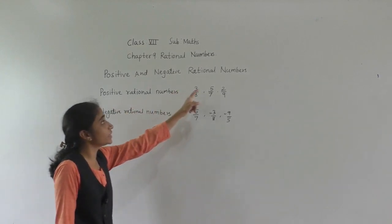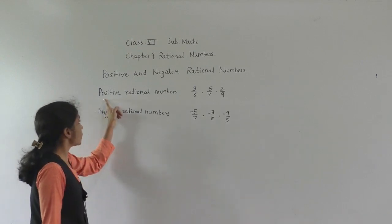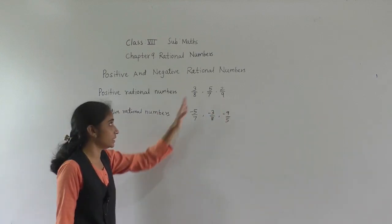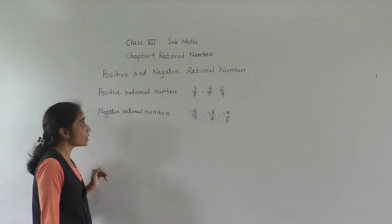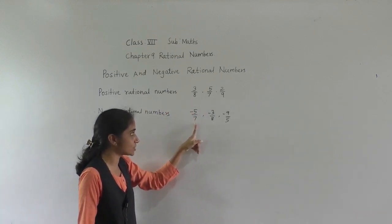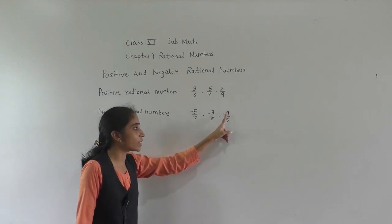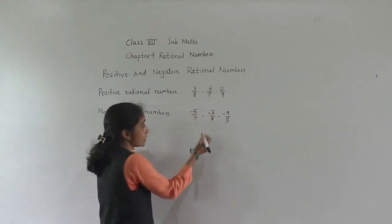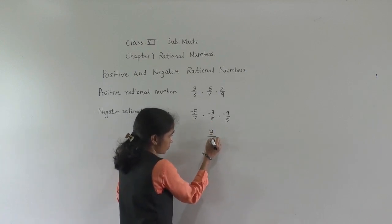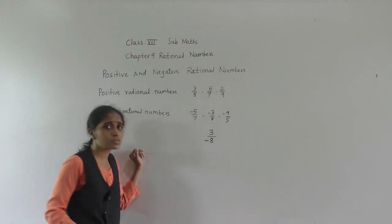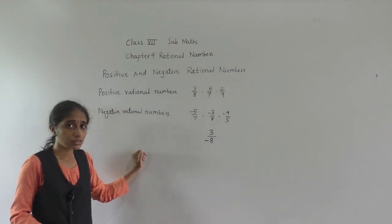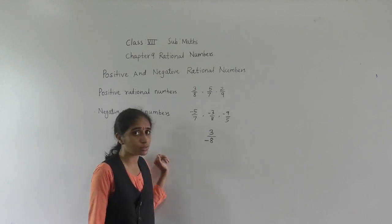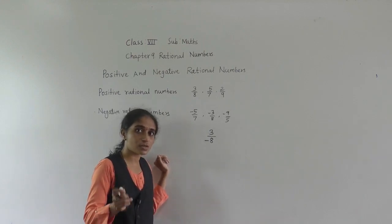Let's learn positive and negative rational numbers. Positive rational numbers: 3 upon 8, 5 upon 7, 2 upon 9 — these are the positive rational numbers; there is no negative sign. Now negative rational numbers: minus 5 upon 7, minus 3 upon 8, minus 9 upon 5 — these have the negative sign. Now suppose I write 3 upon minus 8 — is this a negative rational number? Yes, this is also a negative rational number.